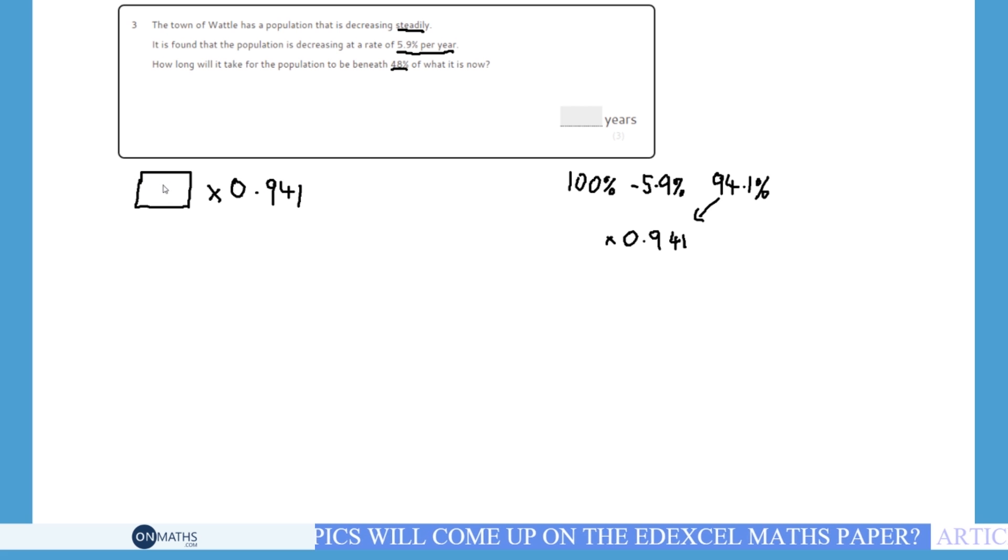Now, because I don't have a quantity, I'm just going to not use a quantity. Some people, in some questions, can just make up a quantity. So make up 100. And actually, on this one, it would work. If you make up 100, and then just wait until you get below 48%—oh, 48 pounds—or 48, I should say, because there's no money in this question. So you just wait until you get below 48. You don't need to do that. You can just use the multiplier.